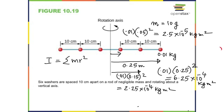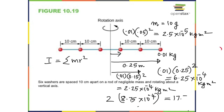Add all three values. Some might wonder: are you forgetting the washers on the other side? No — because it's symmetric. Whatever you got on one side, you get the same on the other side, so multiply by 2. The total comes to 8.75 times 10⁻⁴, times 2, equals 17.5 times 10⁻⁴ kg·m².